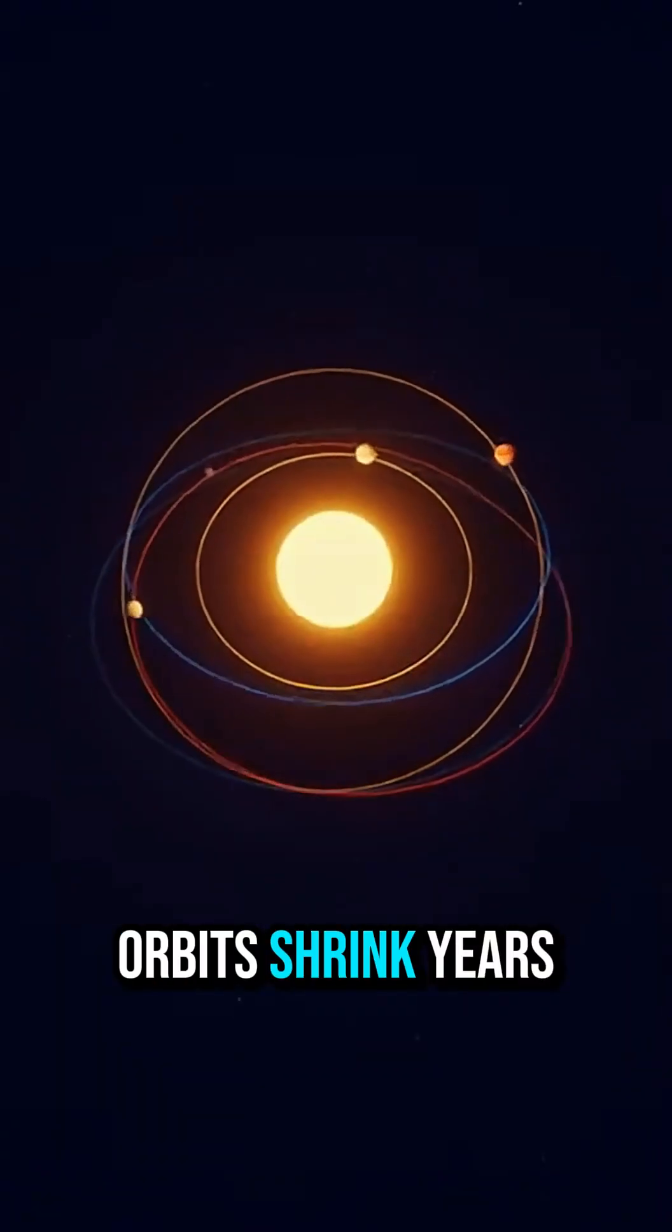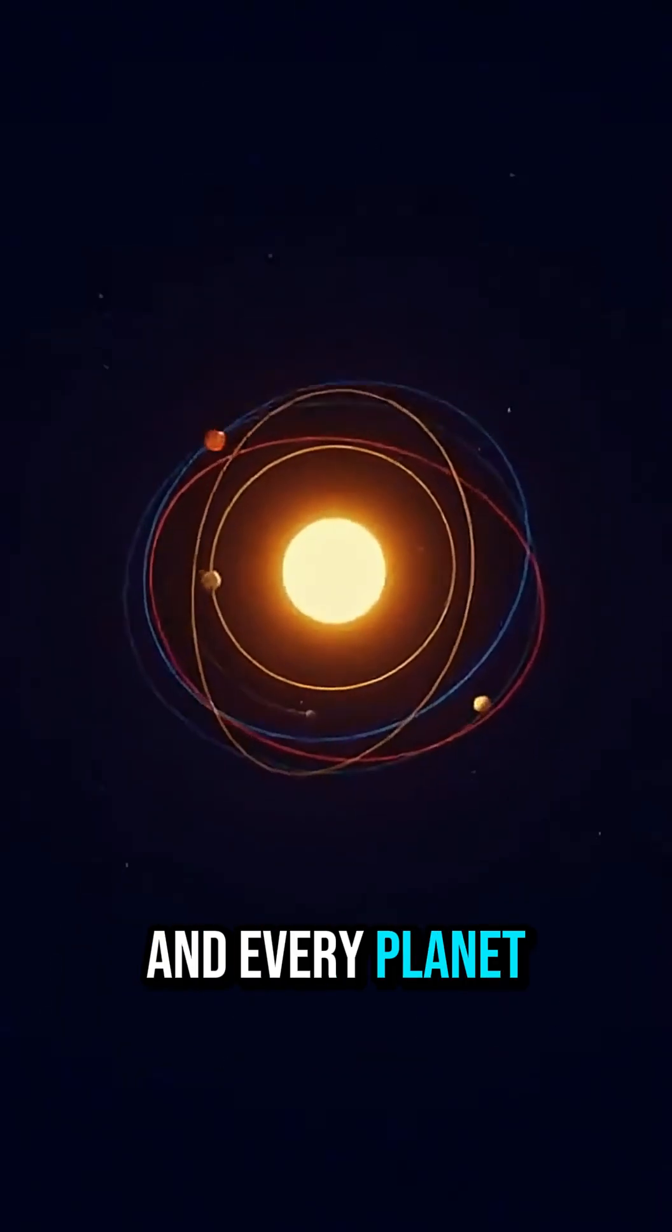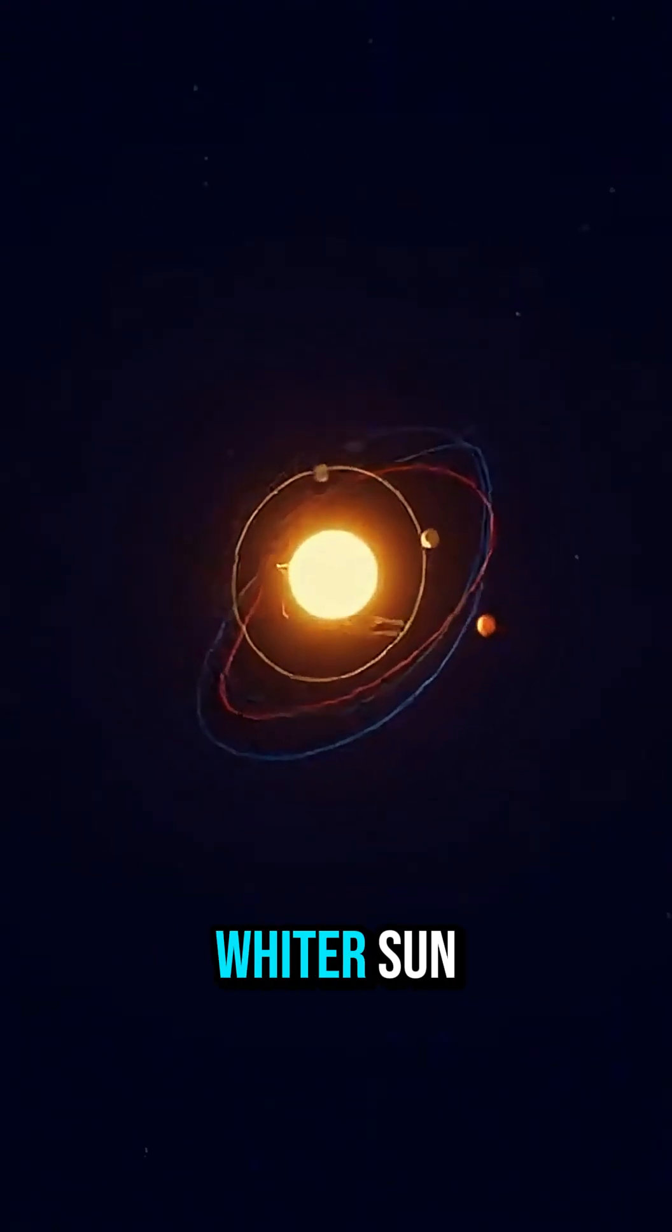Orbits shrink, years get shorter, and every planet is pulled a little closer to a hotter, whiter sun.